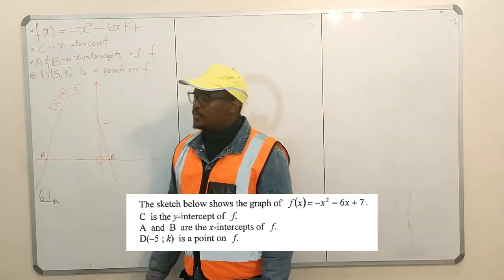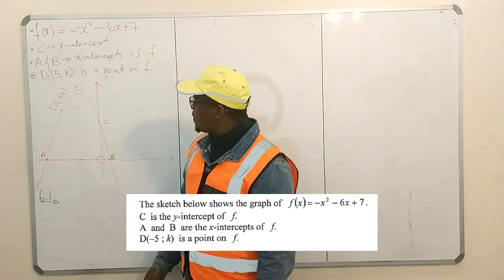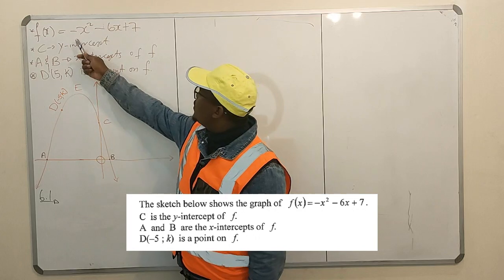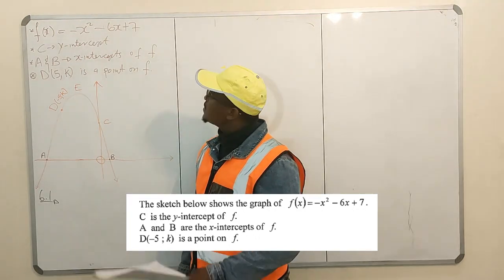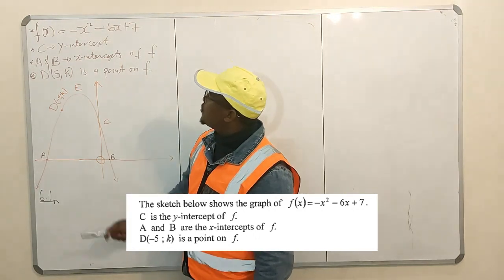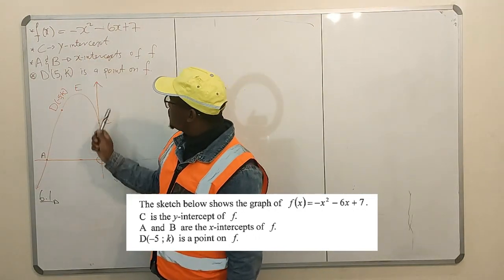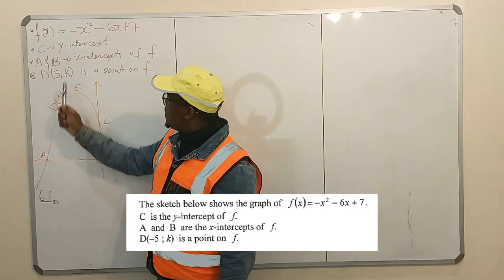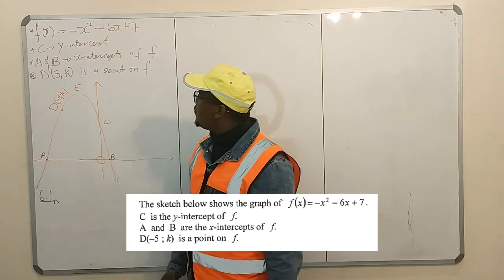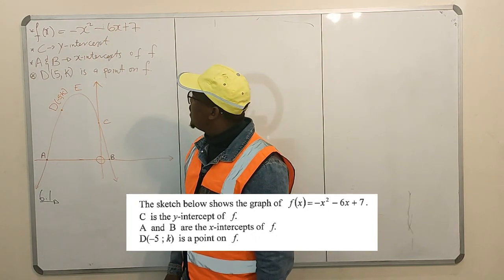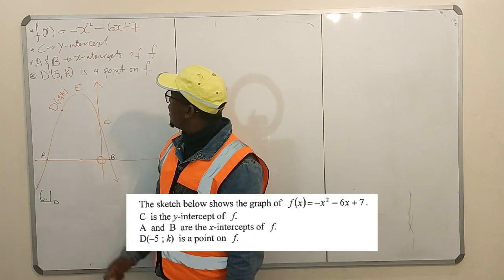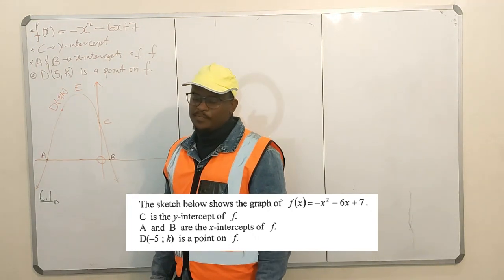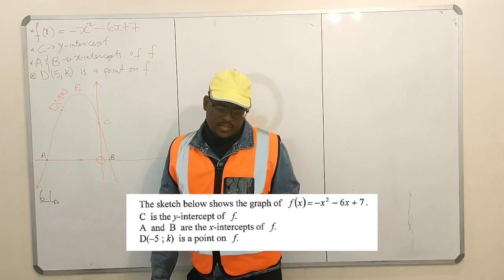As you can see, we're given this parabolic function with this equation. We're told that c is the y-intercept, a and b are the x-intercepts of our function f, and d is a point on f. Let's go.